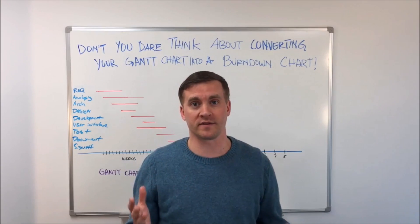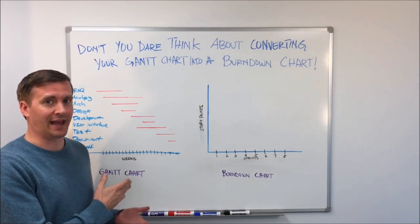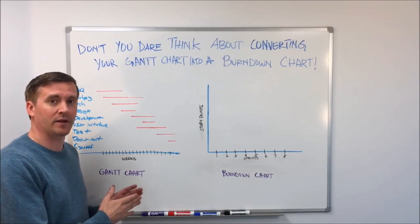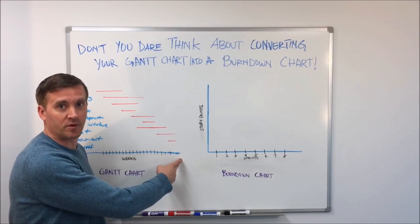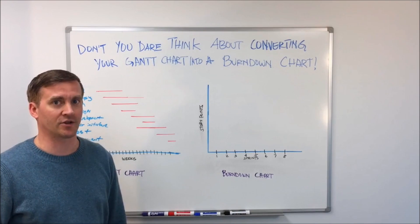So first of all, what are these two charts? On the left here, we have a Gantt chart. A Gantt chart is a way to measure progress towards a stated set of deliverables. They're very common in traditional project management.